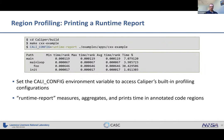Once you have region instrumentation in place, you can start recording performance data. The easiest way is to use one of Caliper's built-in profiling configurations. For example, the runtime_report configuration measures, aggregates, and prints the time spent in your annotated regions. To enable it, use the CALI_CONFIG environment variable — set it to runtime_report, run your program, and it will print a report at the end.